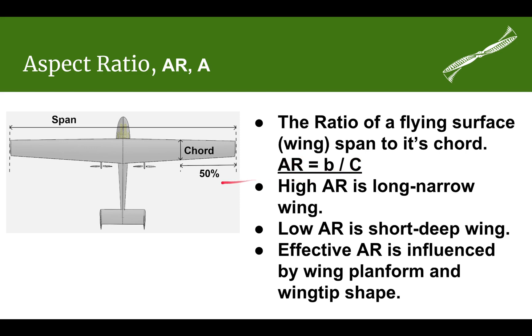The chord is typically something called the mean aerodynamic chord, which we'll cover in another video. But for a tapered wing, the chord is going to be halfway along the semi-span.